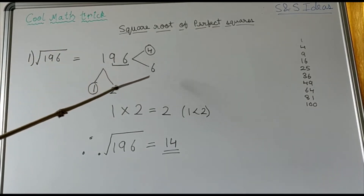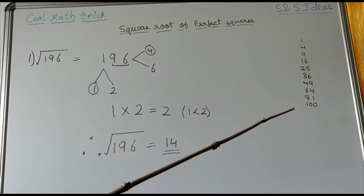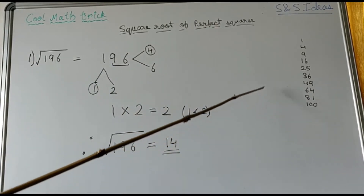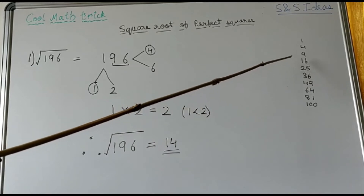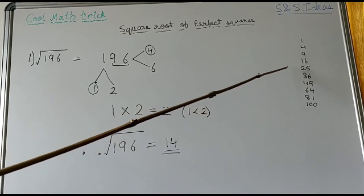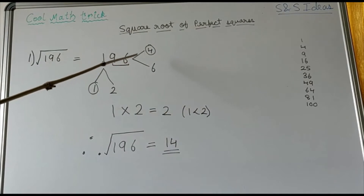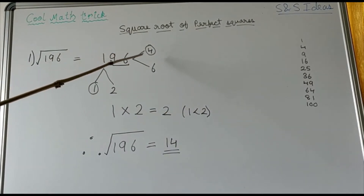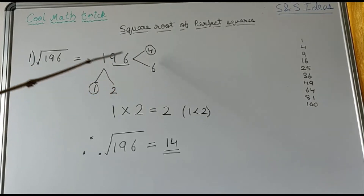Now, can you see which square numbers end with the digit 6? Yes, you are right — it is 4 squared (16) and 6 squared (36). So here I have written the two possibilities that can be the units place of our square root.